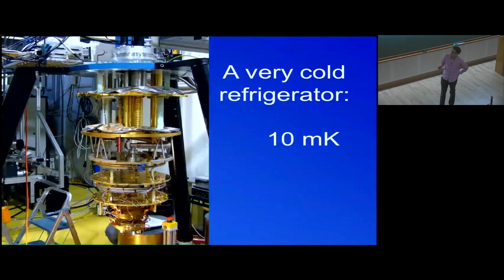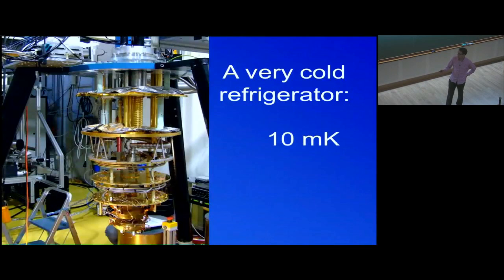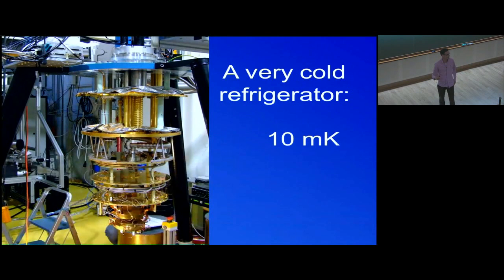What we do is we work at very low temperatures. This is the inside of one of our refrigerators and this plate becomes 10 millikelvin. So every plate is colder than the previous one. This one is 4 kelvin and it's cooled by a pulse tube, which is a nasty piece of equipment powered by a compressor that hisses.